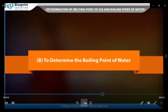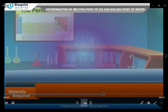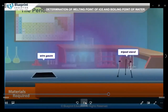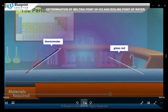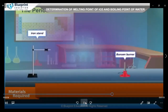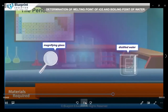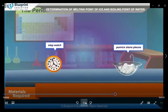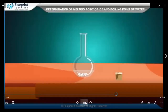To determine the boiling point of water, the materials required are: a round-bottomed flask of 250 ml fitted with a two-hole stopper and pumice stones, glass beaker of 100 ml, wire gauze, tripod stand, thermometer, glass rod, iron stand, Bunsen burner, magnifying glass, distilled water, stopwatch, and pumice stone pieces.